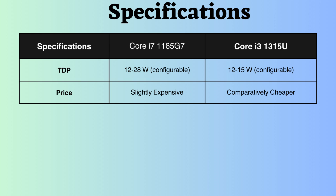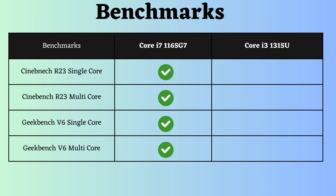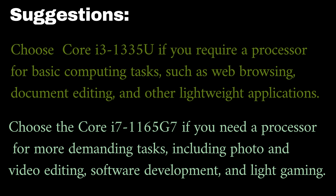Now let's delve into benchmark comparisons. In both Cinebench R23 and Geekbench V6, for both single-core and multi-core performance, the Intel Core i3-1315U outperforms the Core i7-1165G7.